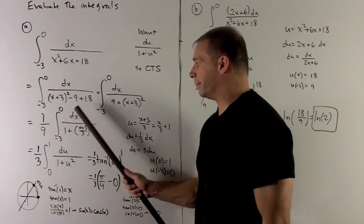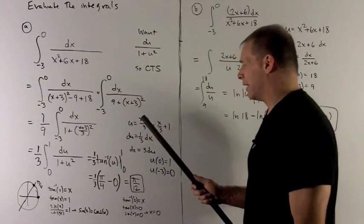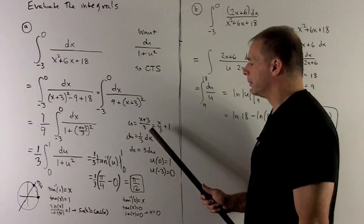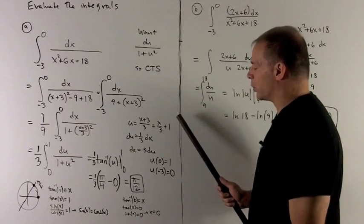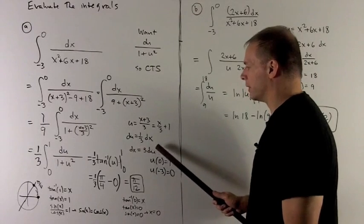This now looks great. I can get rid of what's in here by substituting it out. So I'll have u equal to x plus 3 over 3, which is x plus 3 over 3. du is 1 third dx, or dx equals 3 du.